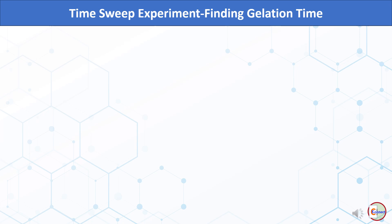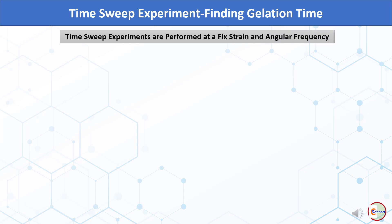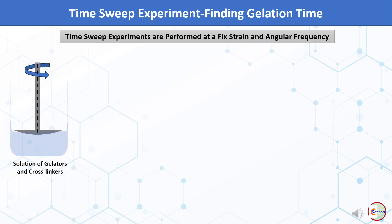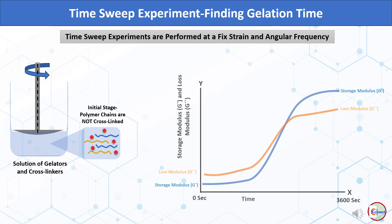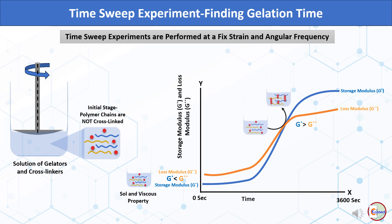The third type of rheology study is the time sweep experiment, mainly performed to find out gelation time. It is performed at a fixed strain and angular frequency on a solution of gelators, polymers, and cross-linkers — an initial stage when polymer chains are not cross-linked. At the initial stage the hydrogel is in solution form, showing higher loss modulus than storage modulus. As the experiment progresses, storage modulus increases and eventually surpasses loss modulus, indicating elastic or solid-like properties. The crossover point — where storage modulus crosses the loss modulus — is the precise gelation time.